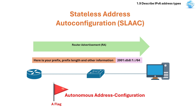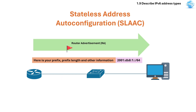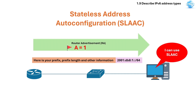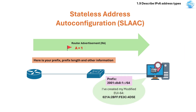One flag is the A flag, which stands for Autonomous Address Configuration Flag. The A flag is a bit set in the RA message sent by an IPv6 router. If the A flag is set to 1, the device can use SLAAC to auto-configure its own IPv6 address. If SLAAC is allowed, the device takes the /64 prefix from the router and creates the remaining 64 bits — the interface ID — on its own, often using modified EUI-64.